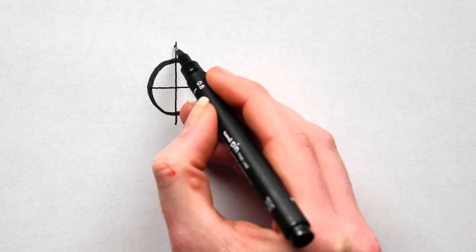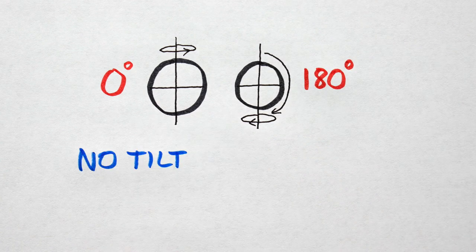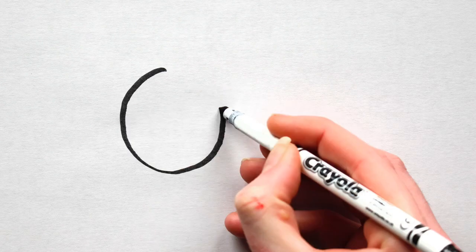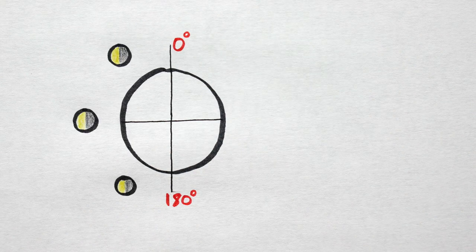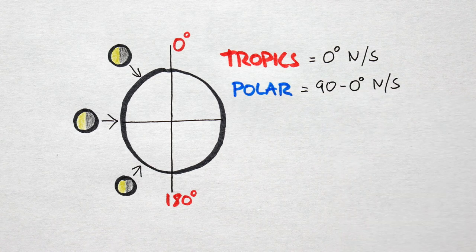Now planets with exactly 0 and 180 degrees of axial tilt are special. Why? Because no tilt means no seasons. Day and night will always be of equal length on every part of the planet. Therefore, tropic and polar circles can't exist on a zero tilt world.